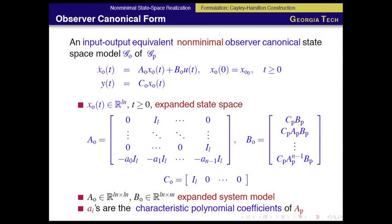The first step is writing an input-output equivalent nonminimal observer canonical state-space model G0 of the actual system. Here, x0 is an expanded state, and A0 can be constructed like minus a0 to minus a1. These are the characteristic polynomial coefficients of the actual system Ap that we do not know.